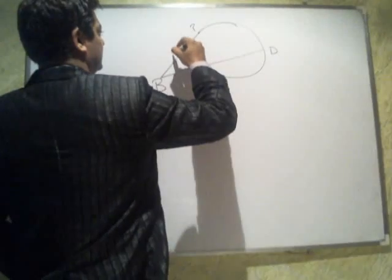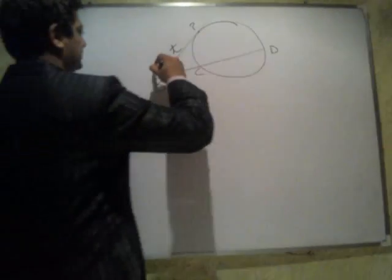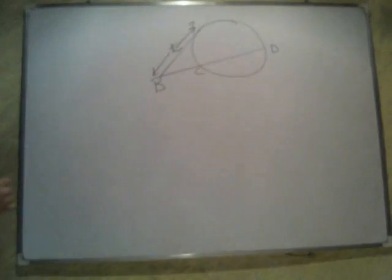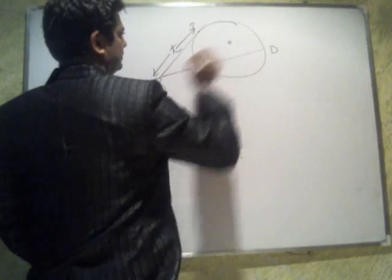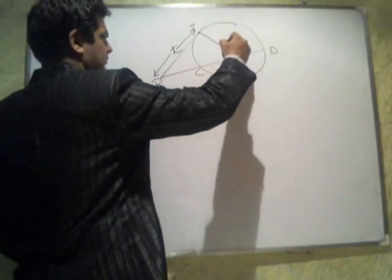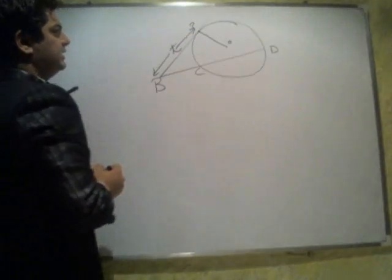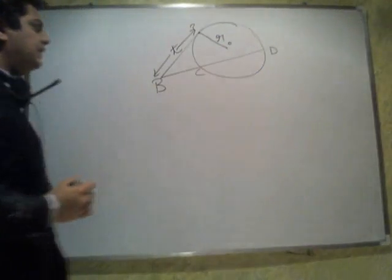This T is the length of the tangent. So there must be a center over here. This O, OP must be perpendicular to the tangent, as we know that radius is perpendicular to the tangent, this is of R.